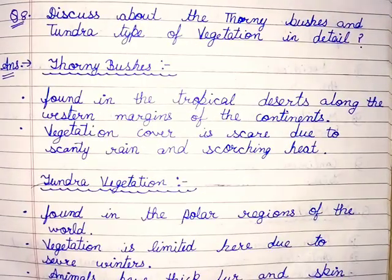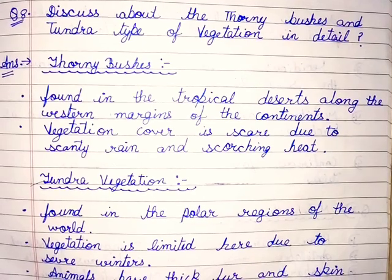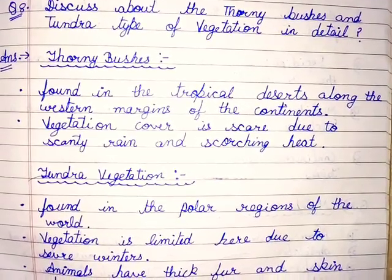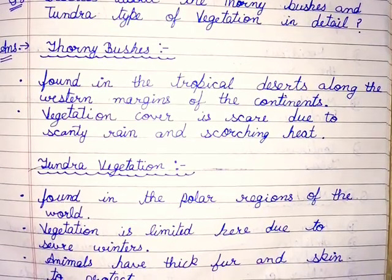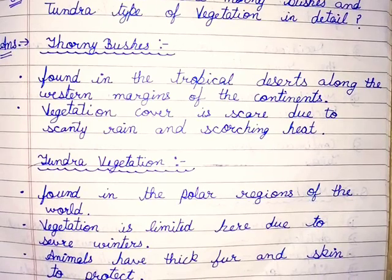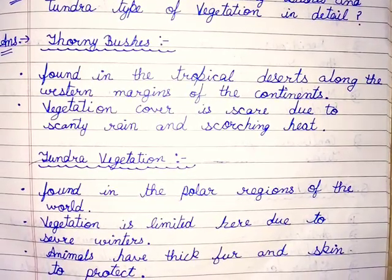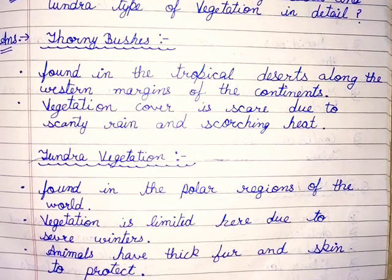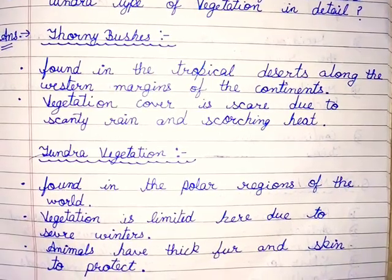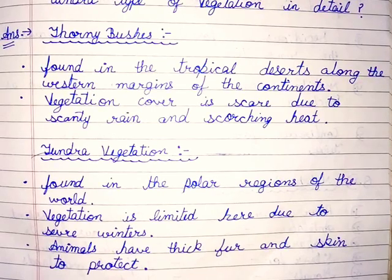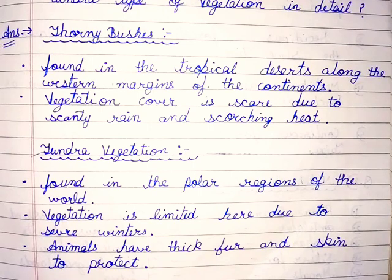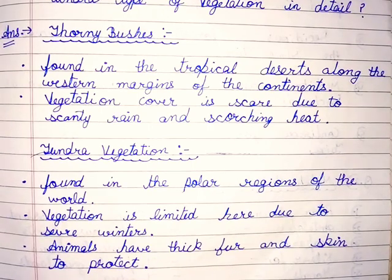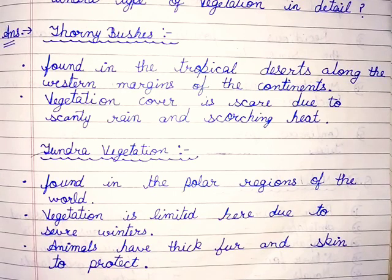Question number 8: discuss about the thorny bushes and tundra type of vegetation in detail. Thorny bushes are found in the tropical deserts along the western margin of the continents. Vegetation cover is scarce due to scanty rain and scorching heat. Tundra vegetation is found in the polar regions of the world. Vegetation is limited here due to severe winters. Animals have thick fur and skin to protect themselves. Thank you friends.